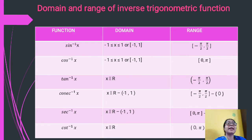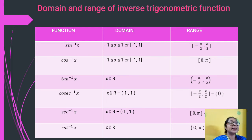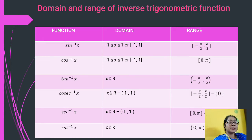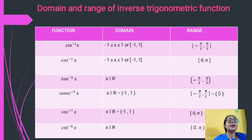Tan⁻¹(x): x belongs to all real numbers and range is (−π/2, +π/2). Then cosec⁻¹(x): x belongs to real numbers except the interval (−1, +1). The range of cosec⁻¹(x) is [−π/2, +π/2] except 0. Why except 0? Because cosec⁻¹(x) means 1/sin⁻¹(x), and sin(0) = 0, making 1/0 undefined. So cosec⁻¹(x) exists except at 0.